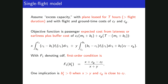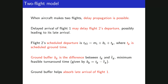That's the easy part — the single-flight model. Now let's talk about the two-flight model. The same airplane makes flight one and then flight two, with different passengers on each flight. The point is that a late arrival of flight one may delay flight two's departure, possibly leading to its late arrival. Flight two's scheduled departure time TD2 equals the scheduled arrival time of flight one — that's M1 plus B1 — plus the scheduled ground time TG. The ground buffer BG equals TG minus TG-bar, the minimum feasible turnaround time.